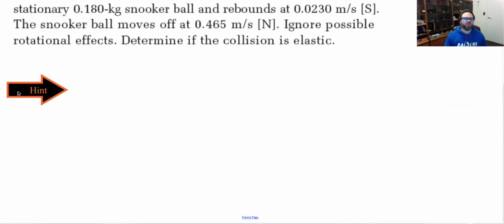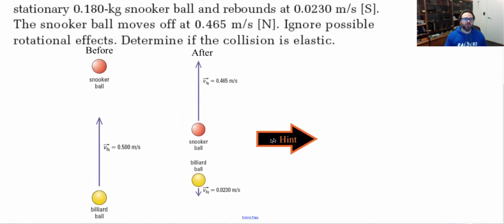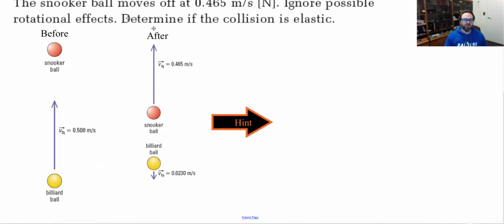So let's take a look at our hint here. So first things first, let's draw a diagram. And our diagram is going to look something like that. Okay, now we know that in order for something to be elastic, our kinetic energy must not change. So we must conserve kinetic energy, must not lose any energy to any other forms of energy. So let's try this out.